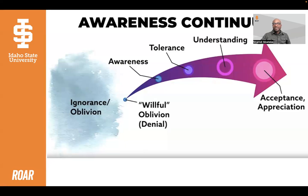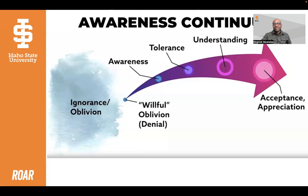Let's talk about the difference between ignorance and oblivion. Oblivion is not knowing what you don't know, or even that there are things you are supposed to know about difference. Ignorance, however, is operating on limited information and presuming that it is factual and very accurate. The difference between ignorance and willful oblivion is that willful oblivion suggests that you know there is more to learn, but you refuse to receive that information because it might take you out of your comfort zone.